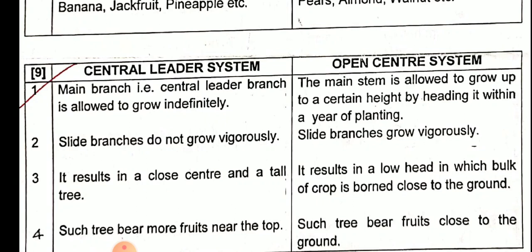In the open center system, after the main stem reaches a certain height, it is headed back or cut back, allowing new growth. Second point: in the central leader system, side branches do not grow vigorously because only the main stem is allowed to grow. But in the open center system, the main stem does not grow vigorously; instead, side branches grow vigorously.